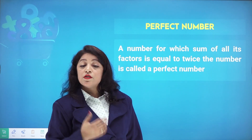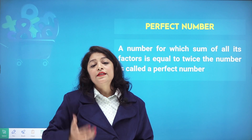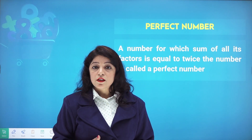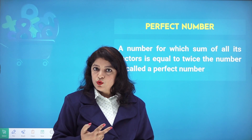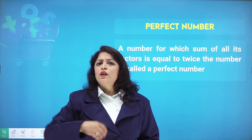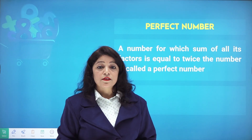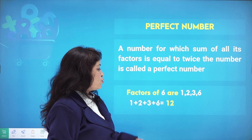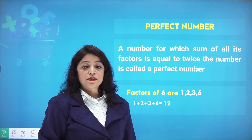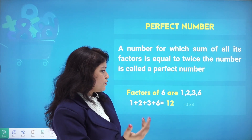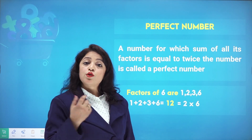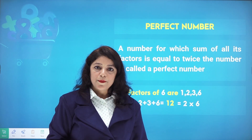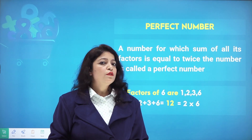What is a perfect number? A perfect number is a number for which the sum of all its factors equals twice the number. For example, the factors of 6 are 1, 2, 3, and 6. Adding them: 1 plus 2 plus 3 plus 6 equals 12. And twice of 6 is also 12. So 6 is a perfect number.